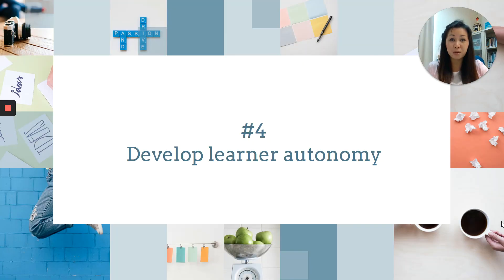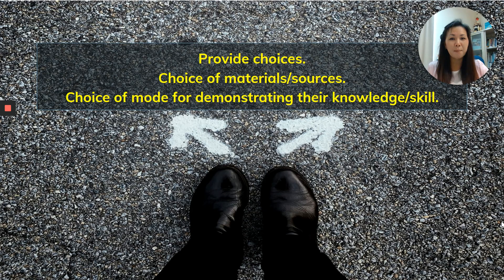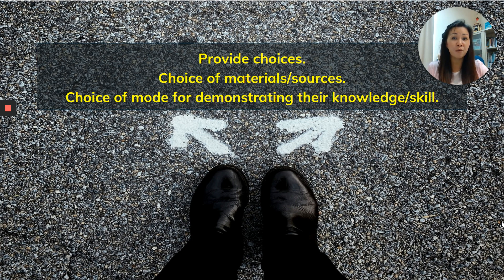Number four is to develop learner autonomy. By this I mean to provide choices — allow your students to choose the type of materials or sources they want to learn from, whether videos, articles, or images. Also allow students to choose how they want to demonstrate their knowledge or skills. You can encourage them to use videos, create an infographic poster, or even create an image.